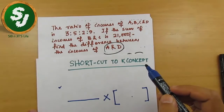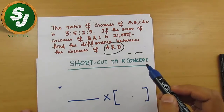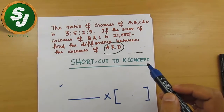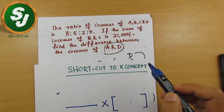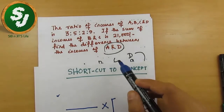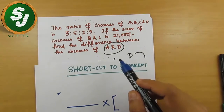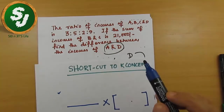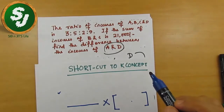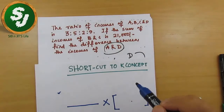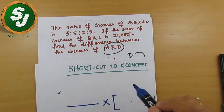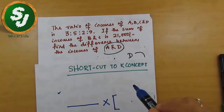The question that we solved in the last video was: the ratio of incomes of A, B, C, D is 3:5:2:9. The sum of incomes of B and C is 21,000. Find the difference between the income of A and D. The most important thing in using this shortcut is that you should very clearly know what to write in each part.